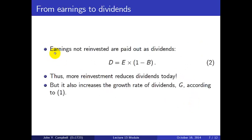Earnings which are not reinvested are going to be paid out as dividends. So dividends equals earnings times (1 minus B), where (1 minus B) is the payout ratio. If the firm is reinvesting more, that by itself is going to reduce dividends today — as B goes up, D goes down. But on the other hand, the growth rate of dividends G is increased by reinvestment.